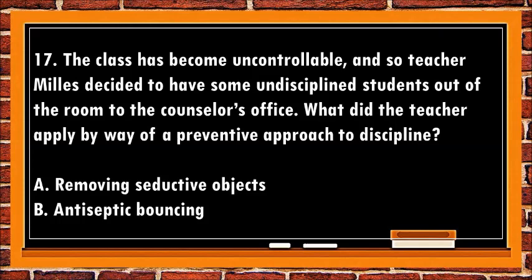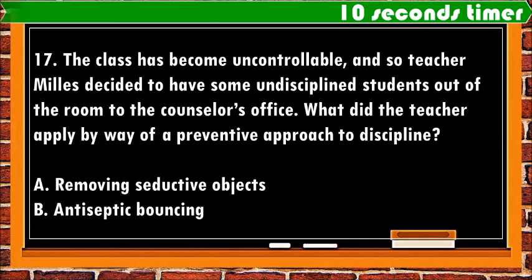17. The class has become uncontrollable, and so teacher Mills decided to have some undisciplined students out of the room to the counselor's office. What did the teacher apply by way of a preventive approach to discipline? a. Removing seductive objects. b. Antiseptic bouncing.